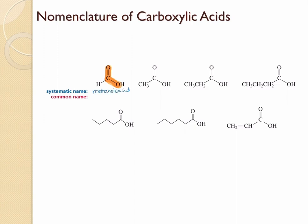The next compound has two carbons with a carboxylic acid group, and therefore this should be ethanoic acid since you have two carbons there. On the third one we have three carbons, and therefore this is going to be propanoic acid. All of these names are IUPAC names or systematic names.